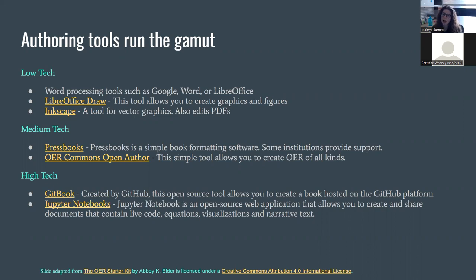There are also some more high-tech solutions. GitBook is one example: if you have a project on GitHub — used a lot in computer science, mathematics, and other disciplines — you can use the GitBook platform, which overlays on GitHub and creates outputs from that. Jupyter Notebooks is another, great for demonstrating live code, mathematical equations, or non-standard scripts, though the barrier of entry is a bit higher. This is just a sampling of available tools, not an exhaustive list.